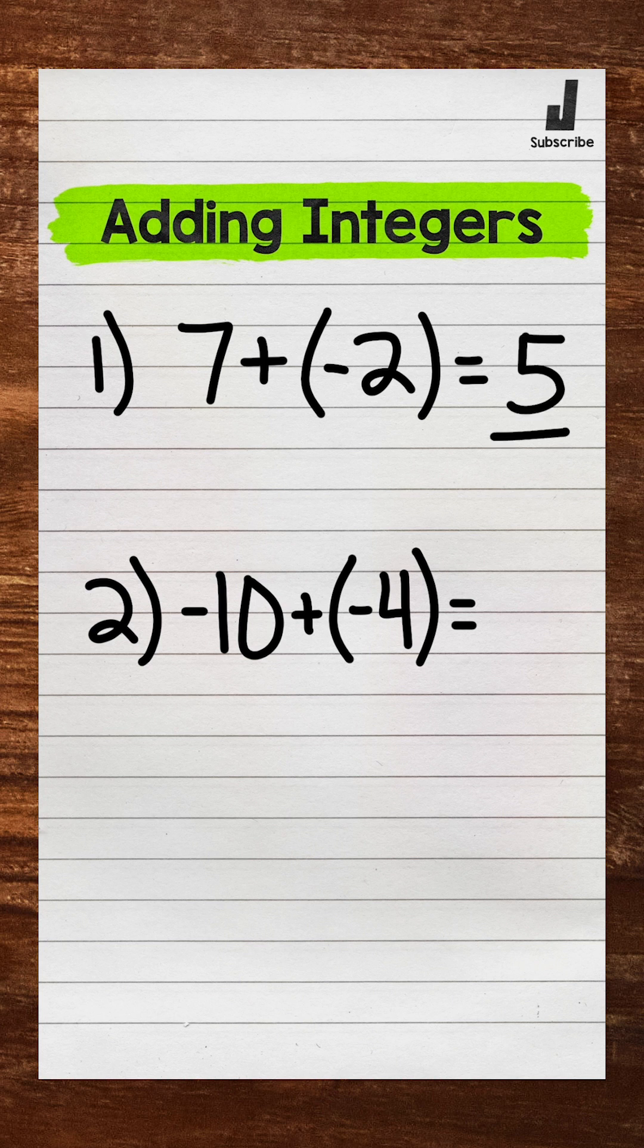So here we are decreasing in value by 2, so 7 plus negative 2 gives us an answer of 5, a positive 5. For number two, we have negative 10 plus negative 4. We are starting at negative 10 and then decreasing in value by 4 because we are adding a negative there. That gives us an answer of negative 14.